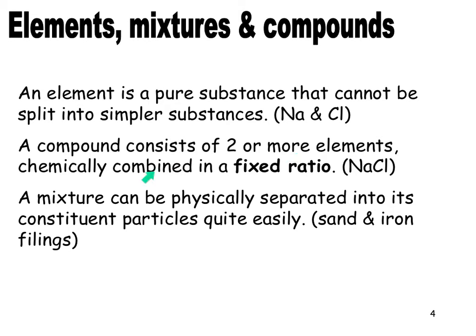A compound consists of two or more elements combined in a fixed ratio — they're not just mixed together, they've been put together in exactly the right proportions. Because of their valency, we know how many sodiums need to go with how many chlorines. Sodium has a valency of one, chlorine has a valency of one, so it's one sodium to one chlorine — a fixed ratio.